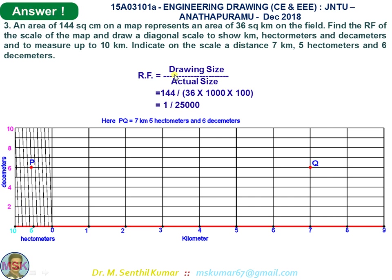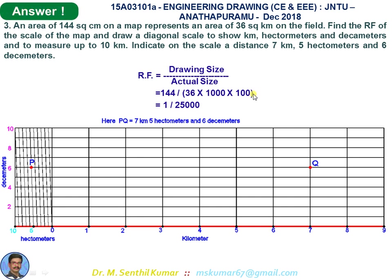First find RF using the formula: RF = drawing area / actual area. Drawing area is 144 cm², actual area is 36 km². Convert 36 km into centimeters: 144 divided by 36 × 1000 × 100. The RF comes out to 1/25000. With this RF, proceed to draw the diagonal scale.